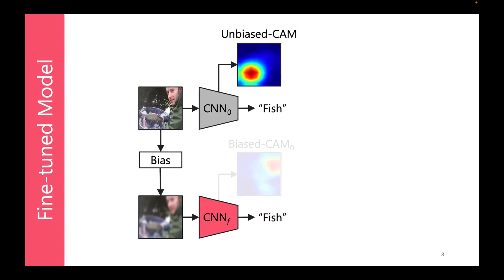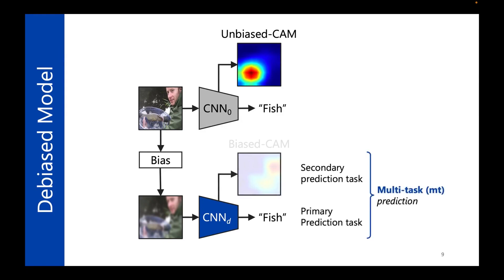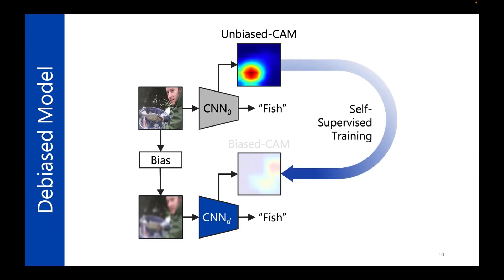One naive solution is fine-tuning the model on blurred images as augmented data. Although this improves prediction, it still suffers from producing deviated saliency maps, since the training process is not aware of explanations. To fix this, we explicitly formulate saliency map generation as a secondary prediction task, leveraging information from unbiased CAMs to construct a self-supervised learning task that helps the model generate debiased CAMs on blurred images, similar to unbiased saliency maps.